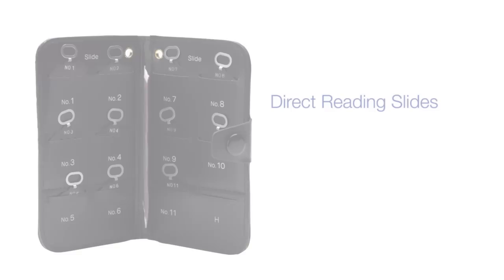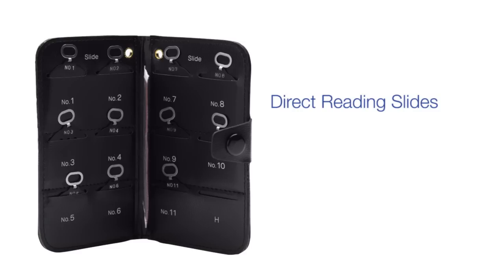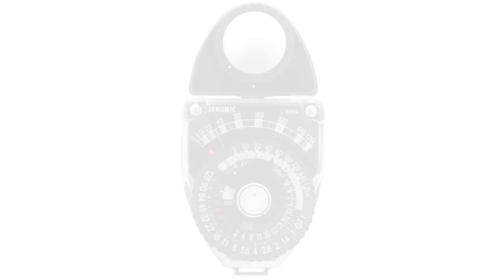Optional accessories include a series of 11 direct reading slides used for measuring light with the LumiSphere and LumiDisc. When using the direct reading slides, the aperture number for exposure is indicated by the meter needle.